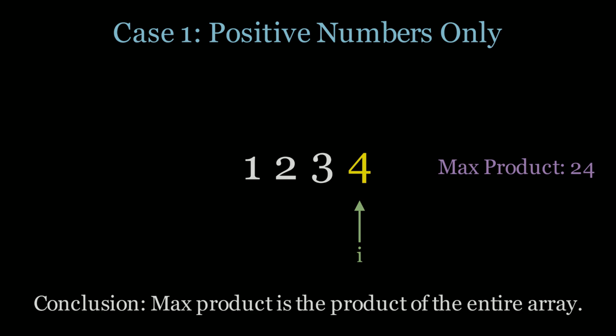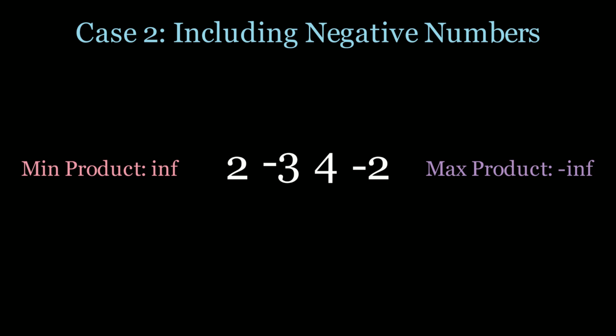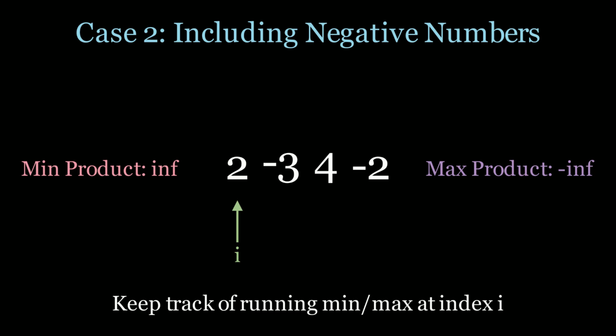Now let's look at negative numbers, which is case number 2. With negative numbers I have 2, negative 3, 4, and negative 2. Negative numbers are tricky because they can flip the sign — if you multiply two negative numbers you end up with a positive number. So for negative numbers it's not good enough to just keep track of the maximum product. We should also keep track of the minimum product, because if the minimum product is negative and you encounter another negative number, a negative times a negative results in a positive that could exceed your current maximum product. We'll introduce an i pointer as we go through the array, keeping track of the running min and max product values up until index i.